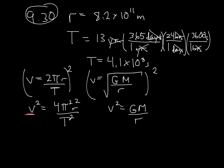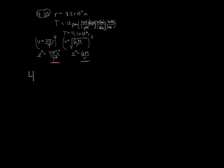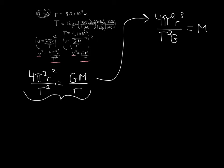Since I have V squared in both equations, I can set them equal to each other: 4 pi squared r squared over T squared equals G times M divided by r. Solving for mass, I get M equals 4 pi squared r cubed divided by G times T squared.